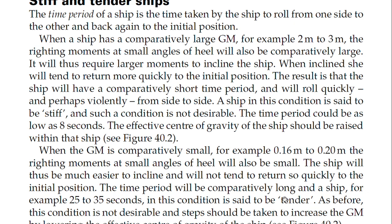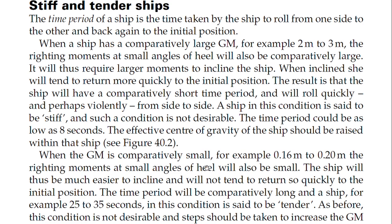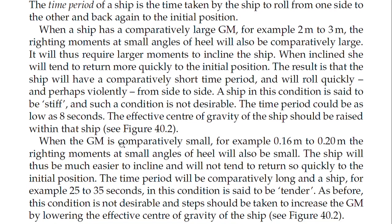A ship in this condition is said to be tender. In a tender ship, GM is comparatively small at around 0.16 to 0.20 meters, the time period is 25 to 35 seconds, and the righting moment at small angles of heel is small. This condition is also not desirable, and steps should be taken to increase the GM — for example by lowering the loading to reduce the effective center of gravity.